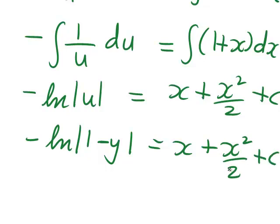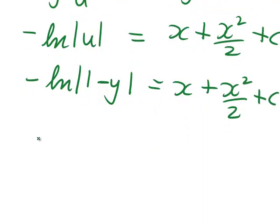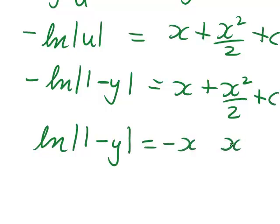We now need to solve this for y. Start by multiplying both sides by negative 1 to get ln|1 minus y| equals negative x minus x²/2 minus c.